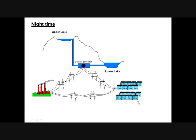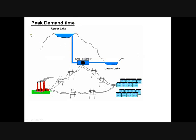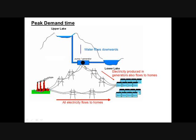Here's how pump storage works. At night time, the towns are having a little sleep — your fridge is running and so on, so you need some electricity but not as much as during the evening. The power station can still run flat out: some electricity goes to homes, but the spare energy goes to storage pumps. These pumps take water from a lake at the bottom and pump it up into a lake at the top of a mountain. By the end of the night all the water is up in the top lake, and you just leave it there during the day.